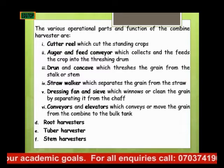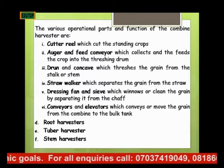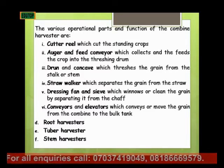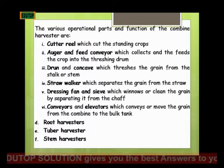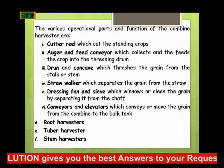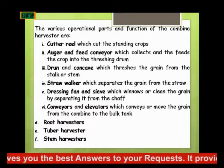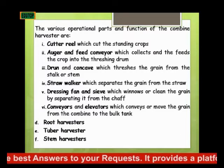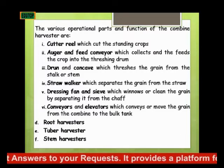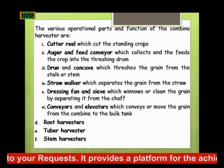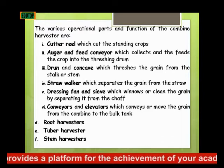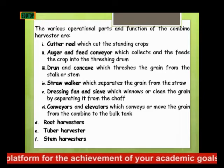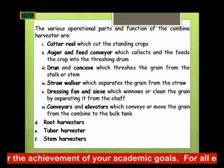The fourth component separates the grain from the straw. The fifth component is the dressing fan and sieve, which cleans the grain by separating it from the chaff. The sixth component is the conveyor or elevator, which conveys or moves the grain from the combined harvester to the bog tank.